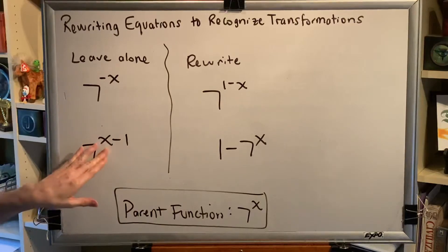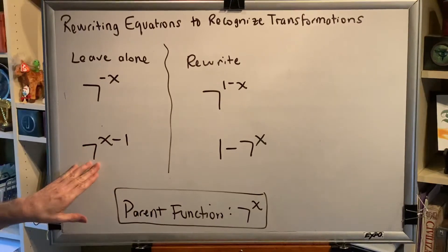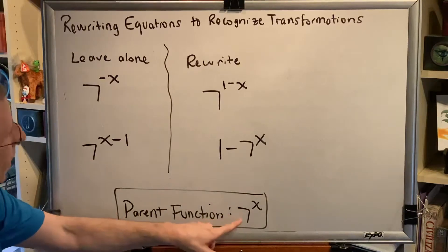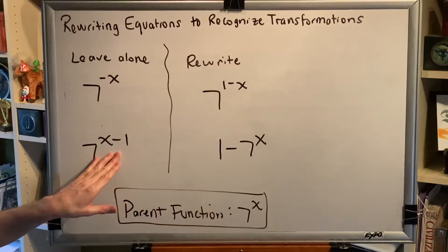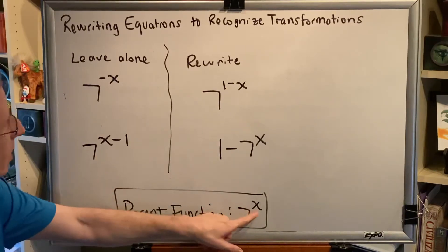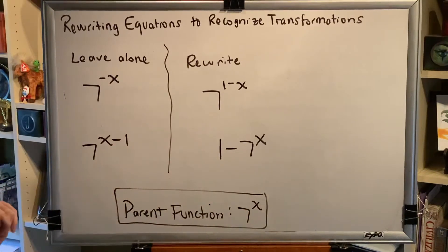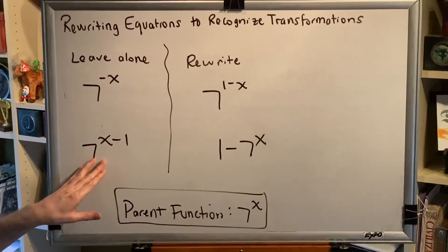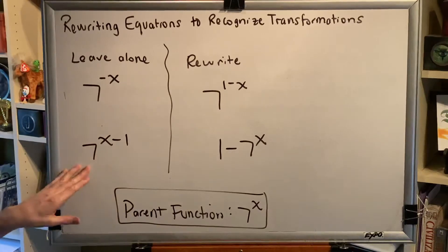Similarly, 7 to the x minus 1 power, we're going to leave that just the way it is, because going from 7 to the x to 7 to the x minus 1 power is easily achieved by just replacing x with x subtract 1, and therefore that's indicative of a horizontal shift specifically to the right one space.